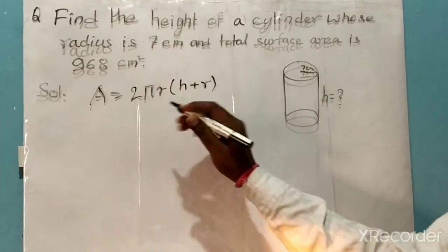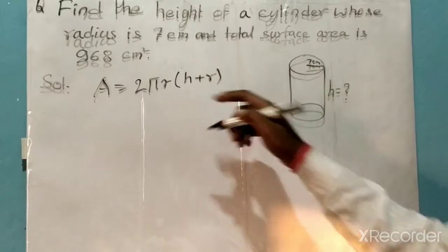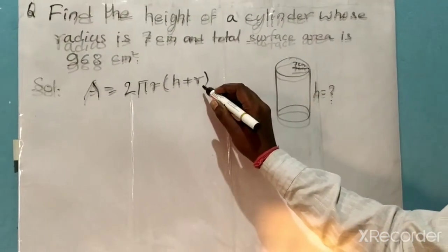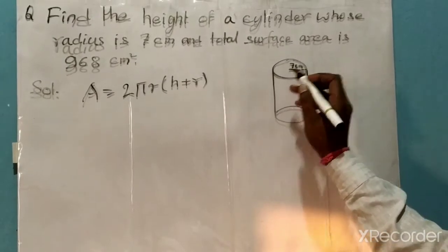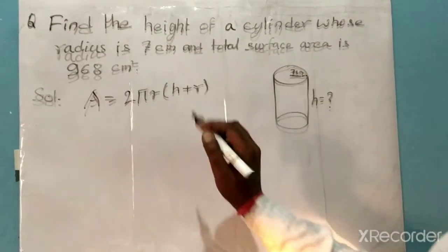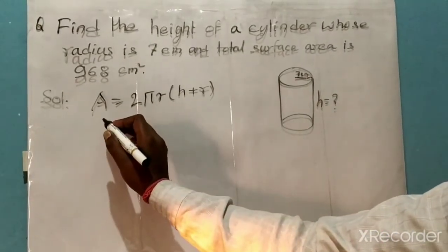In this case, h is the height which we have to find, and r is given as 7 centimeters. The area is also given as 968 square centimeters. Let's solve it.